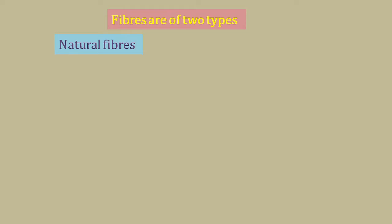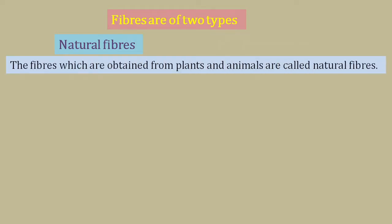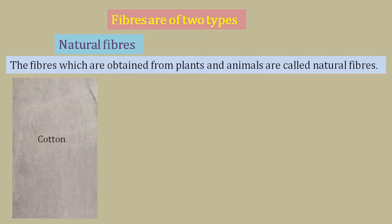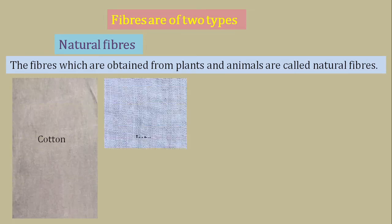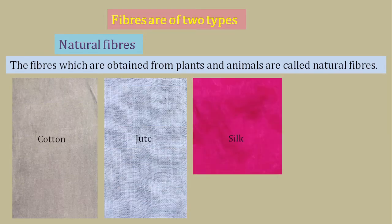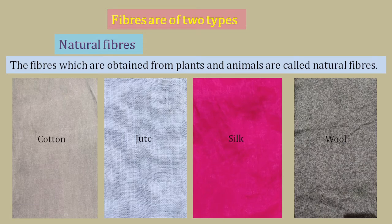Fibers are of two types: natural fibers and synthetic fibers. Those fibers that are obtained from either plants or animals are called natural fibers. For example, cotton, jute, silk and wool are natural fibers.